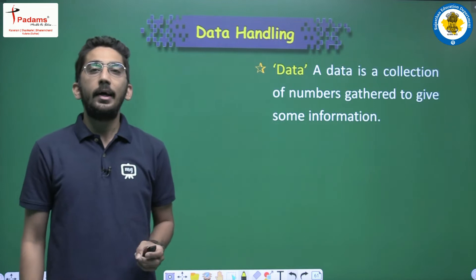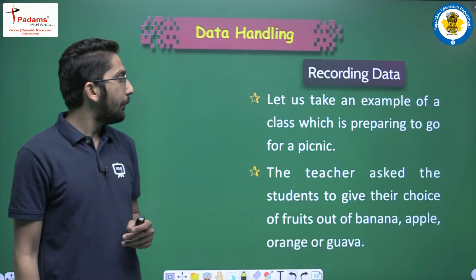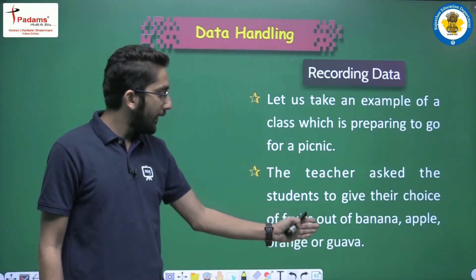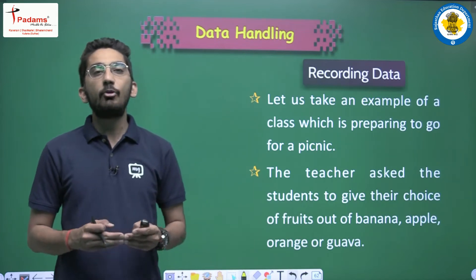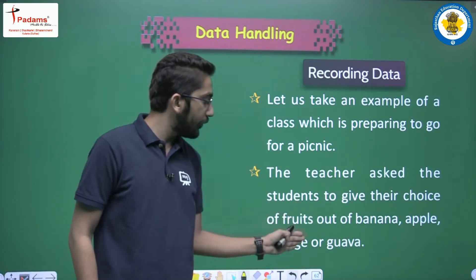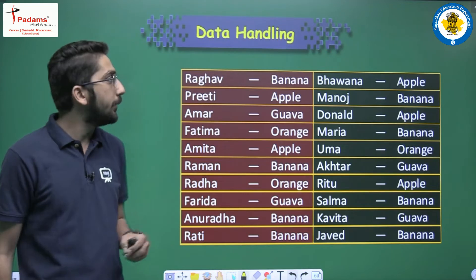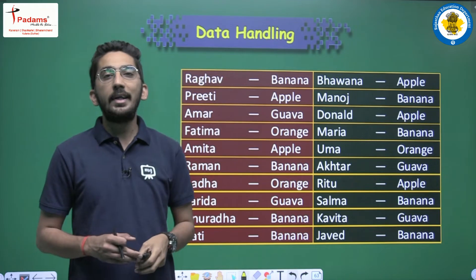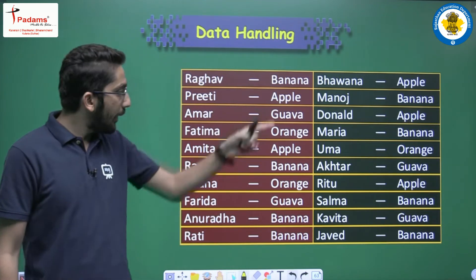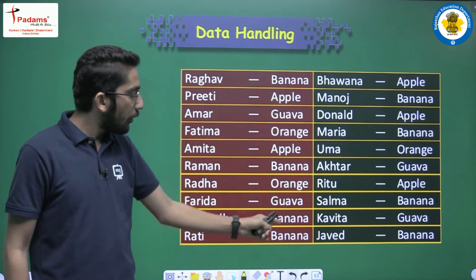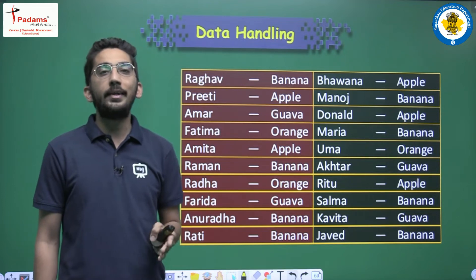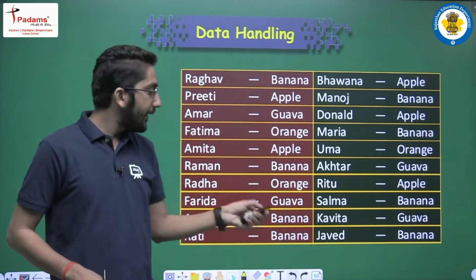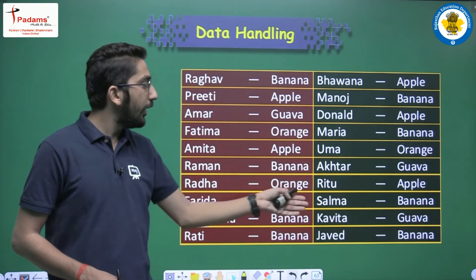Now let us see how to record data with an example. A class is preparing to go for a picnic. The teacher asked the students to give their choice of fruits out of banana, apple, orange, and guava. The teacher got a list — Raghav will have banana, Preeti will have apple, Amar will have guava, and so on. But if the teacher wants to know how many bananas she has to take, she has to go through the entire list and count one by one. Similarly for apples and other fruits — this is a very tedious task.